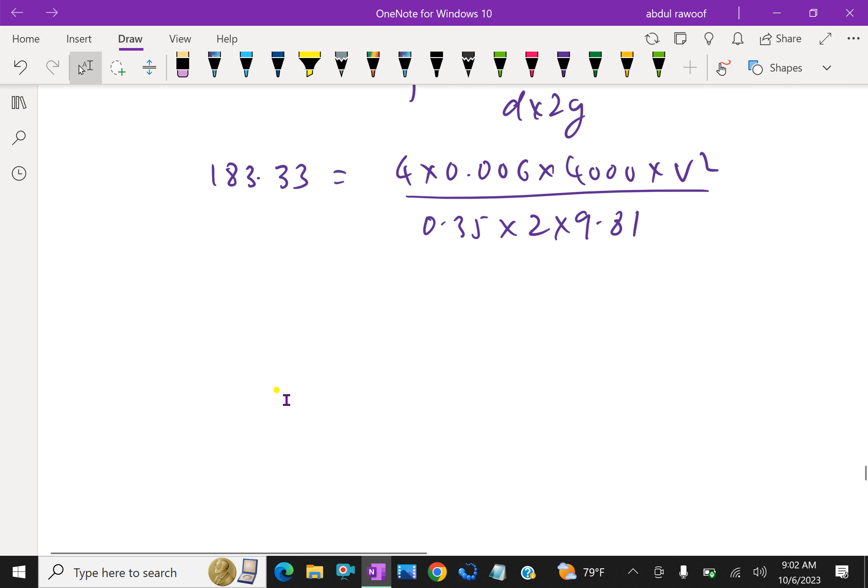By calculation, 183.33 equals 13.98 v squared.